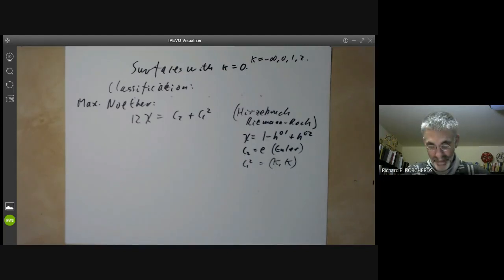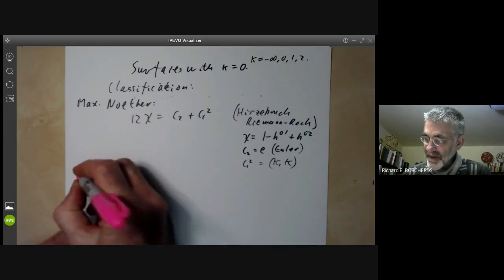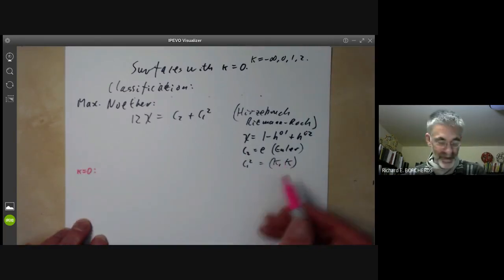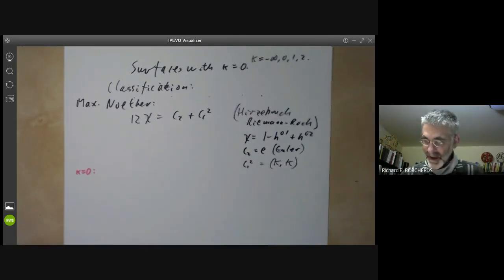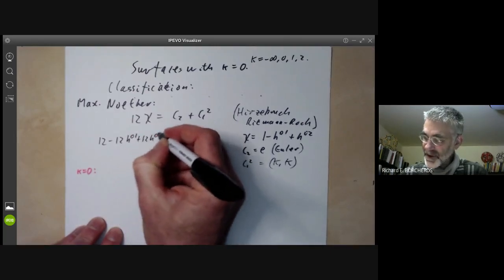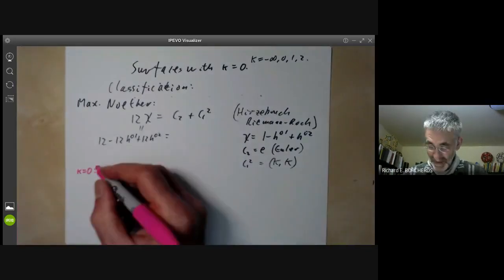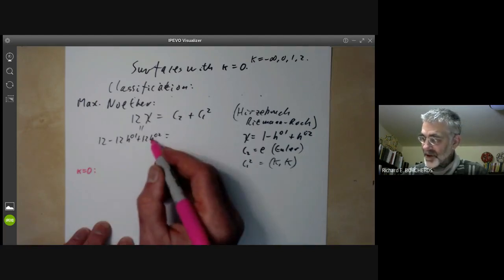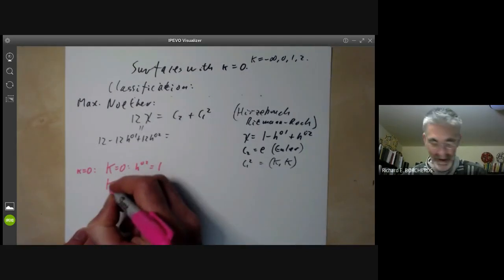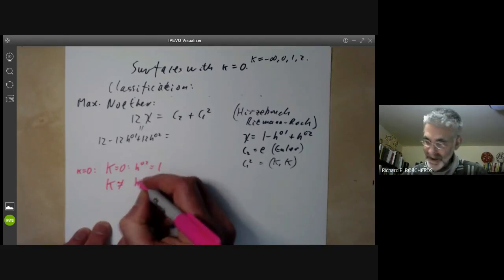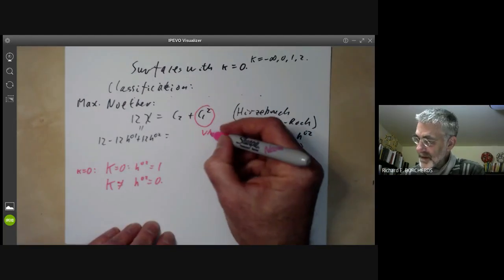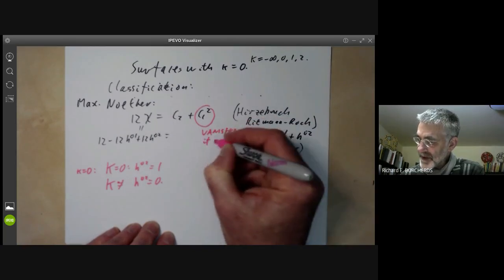Now, in the special case when the Kodaira dimension is equal to zero, and you shouldn't confuse the Kodaira dimension, which is a Greek kappa, with the canonical class, which is a big K. If we write out what this says, it says 12 minus 12H⁰¹ plus 12H⁰² equals 12χ. And if the Kodaira dimension is zero, then H⁰² must be either zero or one.